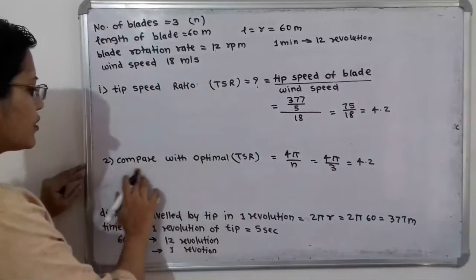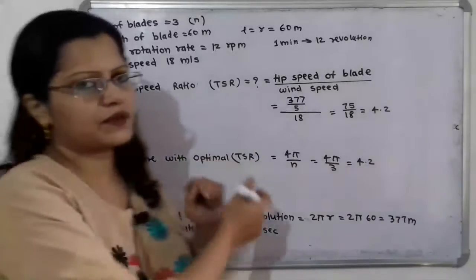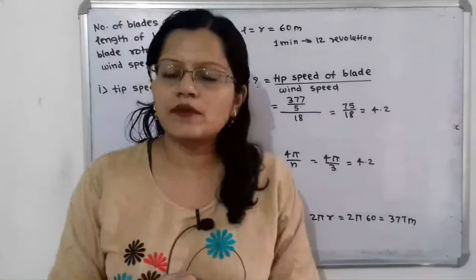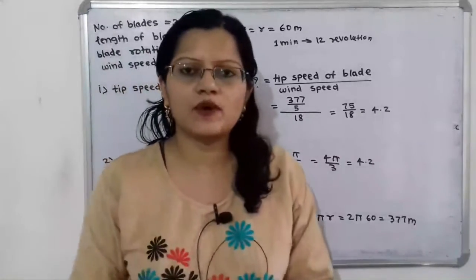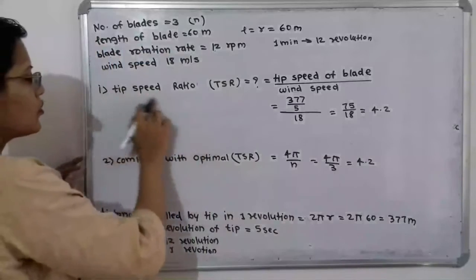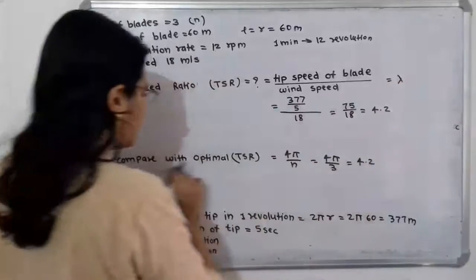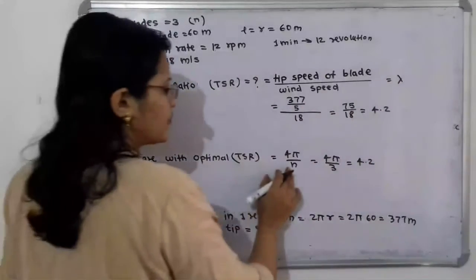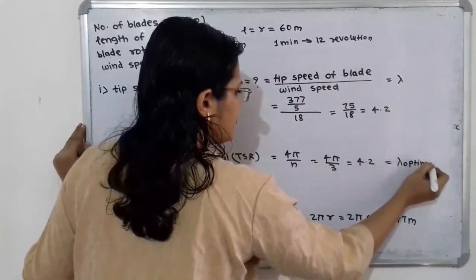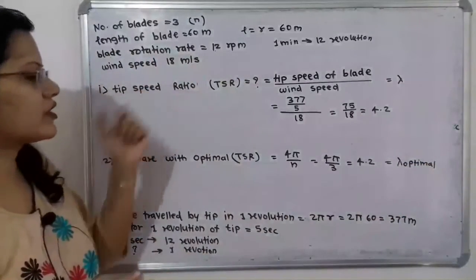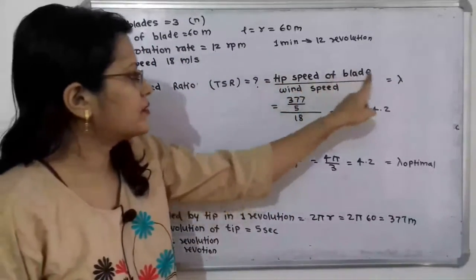We also have to compare the tip speed ratio with the optimal tip speed ratio. The optimal tip speed ratio means the tip speed ratio for maximum power. We will denote the tip speed ratio as lambda (λ) and the optimal tip speed ratio as lambda optimal (λ_optimal).